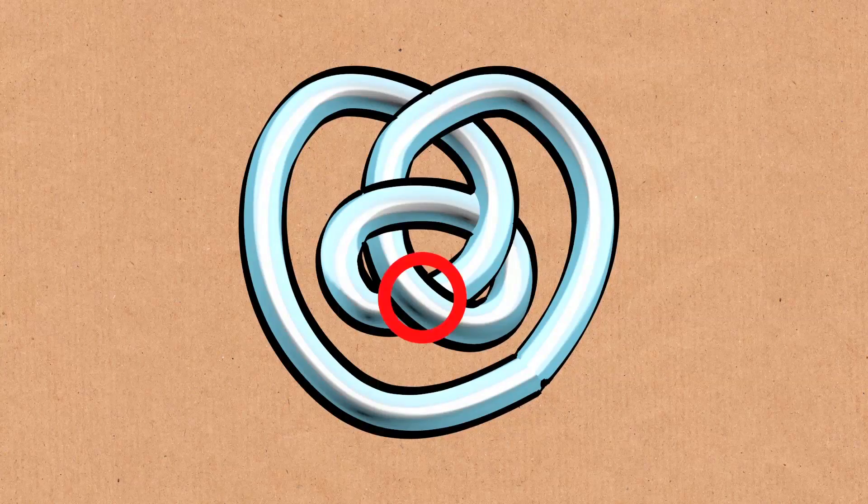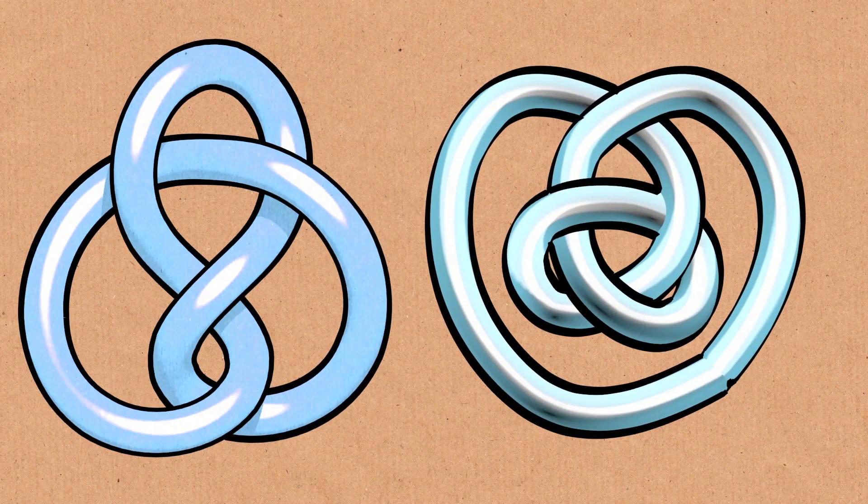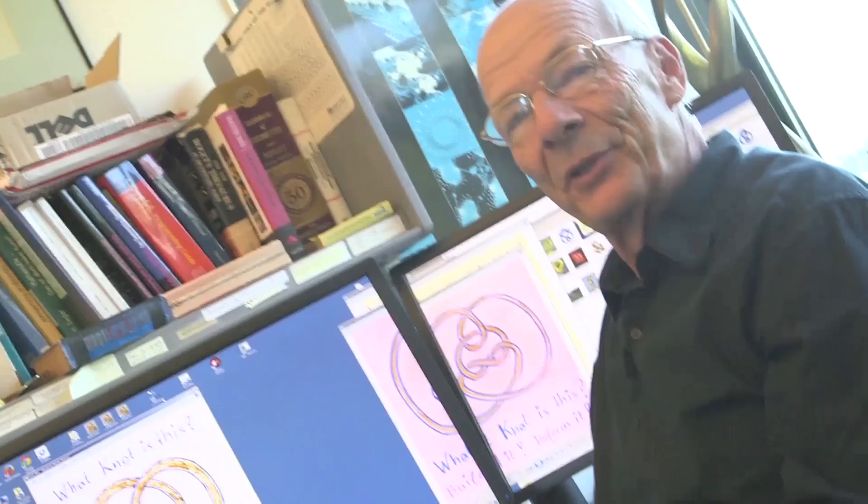If I'm just counting here it's going to be one, two, three, four crossings, so you think oh must be the four crossing knot, must be the figure eight knot. True or not true?